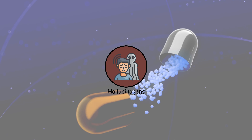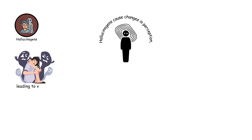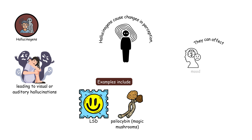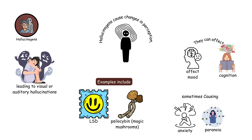Hallucinogens cause changes in perception, leading to visual or auditory hallucinations. Examples include LSD and magic mushrooms. They can affect mood and cognition, sometimes causing anxiety or paranoia.